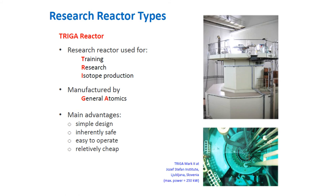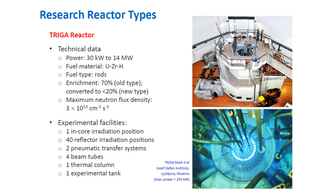The TRIGA reactor stands for Training, Research, Isotope production, and General Atomics — where the acronym reflects both its uses and its manufacturer. It has the main advantages of being simple in design, inherently safe, easy to operate, and relatively cheap. Technical data: power is 30 kW to 14 MW, fuel type is uranium-zirconium-hydride rods, with enrichment of 70% for the old type and less than 20% for the new type.